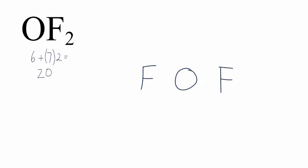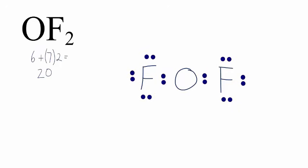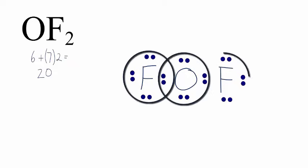We'll place a pair of electrons between the fluorine and the oxygen to form a chemical bond, and then over here as well. Once we've done that, we'll complete the octets around the fluorine atoms — we want to have eight valence electrons around each fluorine. Now the fluorines have eight valence electrons; they have an octet. We've used 16, which means we have four more valence electrons. We'll move back to the central atom and put two valence electrons here, and then two here. We've used all 20 valence electrons, and each atom has an octet. We're done with the Lewis structure for OF2.